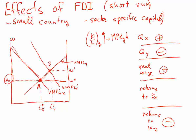The capital-labor ratio in X is a little trickier, because we've had an increase in the amount of labor in sector X and also an increase in the amount of capital in sector X. So it's not immediately clear what happens to that capital-labor ratio, and hence what happens to the marginal productivity of capital in sector X. To work this out, we need to do a thought experiment.